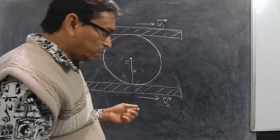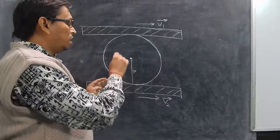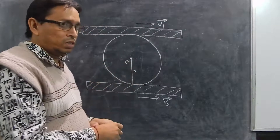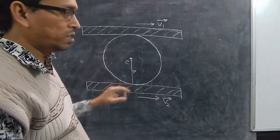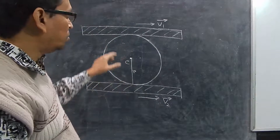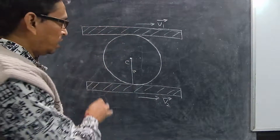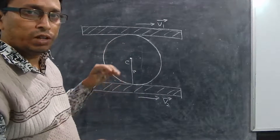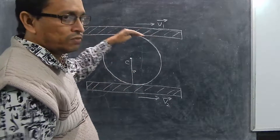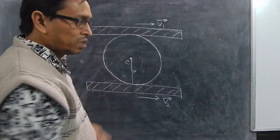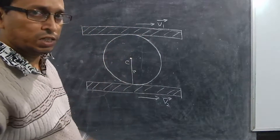Suppose we are interested to find out the angular velocity of a rigid body — a disc or maybe a cylinder — which is placed in between two planks. The two planks are having some velocities and they are rubbing the top and bottom surfaces. We want to calculate the angular velocity in this condition.